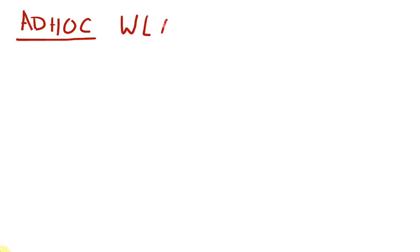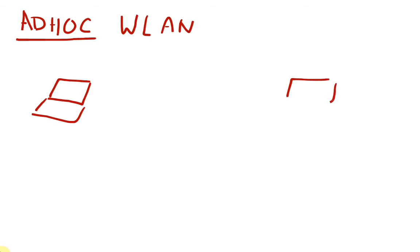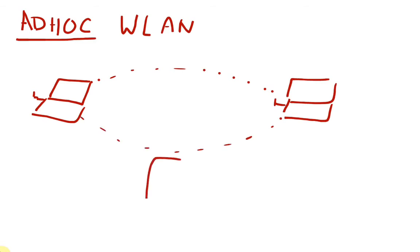Ad hoc wireless LANs are those LANs which do not require any router or access point. You just need two laptops with wireless cards and you can establish your ad hoc network through Windows networking. You simply select ad hoc networks and establish the connection between two or more devices.